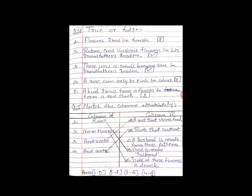Now number 2 — Neem flowers. Neem ke jo patte hote hain aur uske jo white color ke chhote chhote flowers hote hain, uska juice bana ke hum log garmiyon ki season mein peete hain. So match Neem flowers with number E — 'Juice of these flowers is drunk.' Match it.